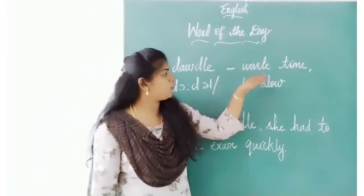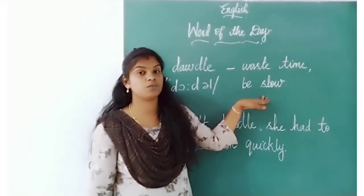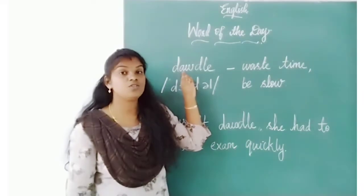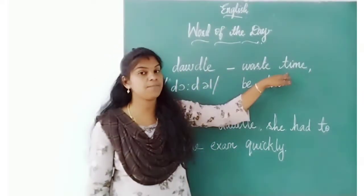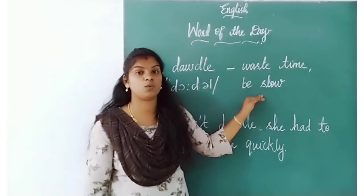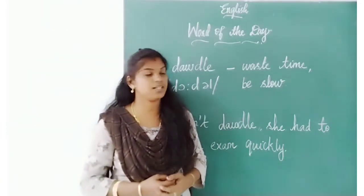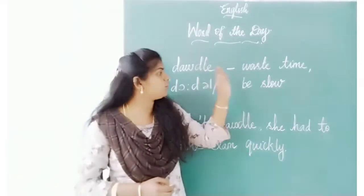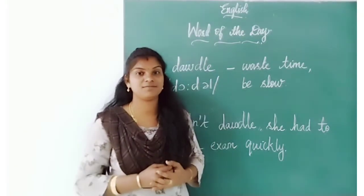Waste time — then be slow. Which word? Dawdle. What is the meaning? Waste time and be slow. Got it? Yes. See, wasting time — that is called 'dawdle.' We are doing this all the time, aren't we? Always we are dawdling.